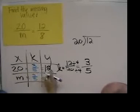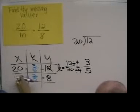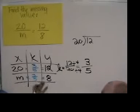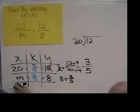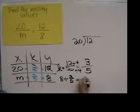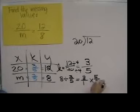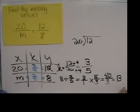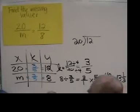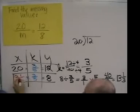So 20 times 3 fifths is equal to 12, and something times 3 fifths is equal to 8. We need to find this mystery value by dividing: 8 divided by 3 fifths gives us our missing value. That's 8 over 1 multiplied by 5 thirds, which is equal to 40 over 3, which reduces to 13 and 1 third. So our missing value m is 13 and 1 third.